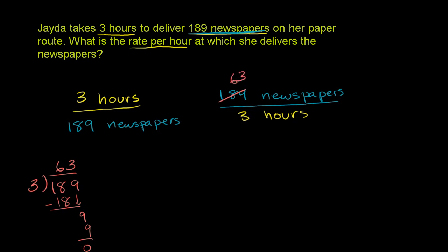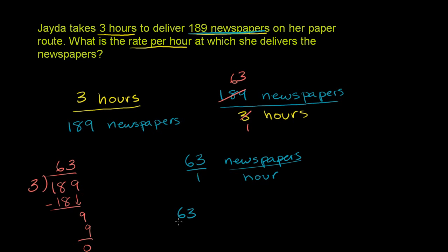And if you divide 3 by 3, you get 1. You have to divide both the numerator and the denominator by the same number. So now we have 63 newspapers for every one hour, which we can write as 63 over 1 newspapers per hour — or simply 63 newspapers per hour.